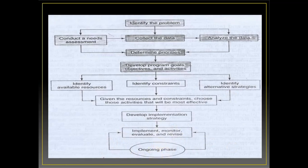That covers all the steps in planning — a very important topic that may appear as a long essay, short essay, or short note. For a 14- or 10-mark question, explain each step using the example of reducing dental caries prevalence. For a 4-mark question, draw the planning cycle diagram and write one or two sentences per step. The next session will cover evaluation, including the criteria of evaluation and types of evaluation.